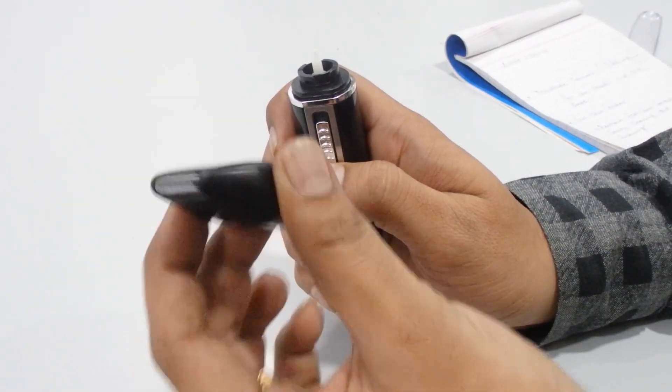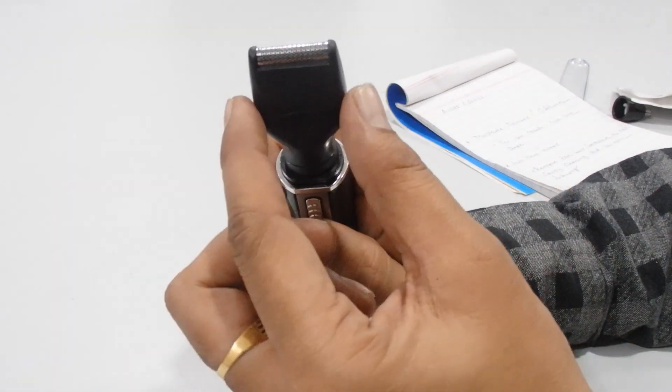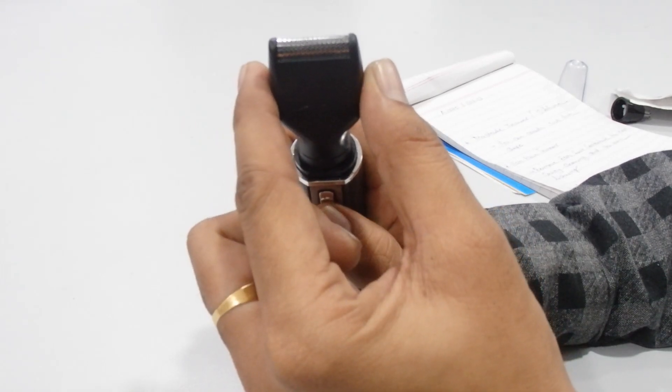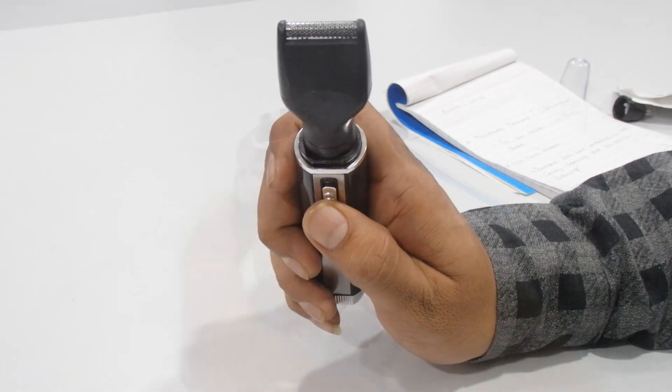Now we'll check the sideburn trimmer. With the help of this sideburn trimmer, you can use it where hair growth is very less.